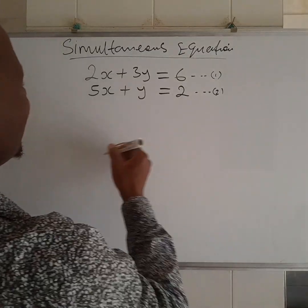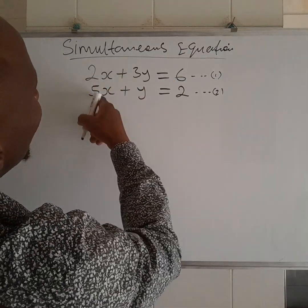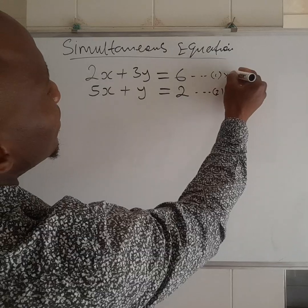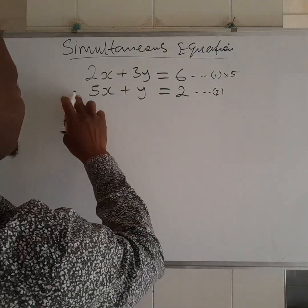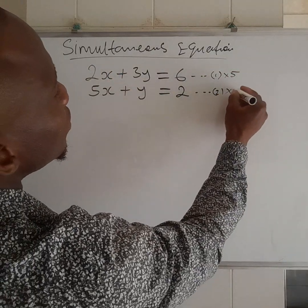From here, we multiply through equation 1 by 5, and equation 2, we multiply it by 2.